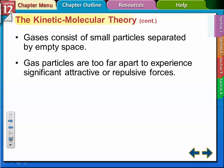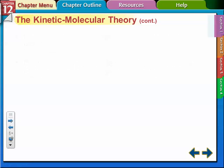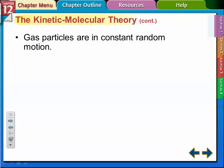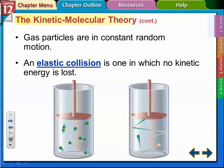Gas particles are too far apart to experience significant attractive or repulsive forces, so they act independently of each other. They're in constant random motion and undergo elastic collisions. Elastic collisions mean that when they hit each other or the sides of the container, no kinetic energy is lost. Kinetic energy is the energy something has when it's moving. These particles bounce off each other and containers with no loss of energy.